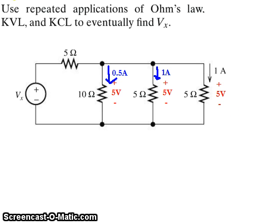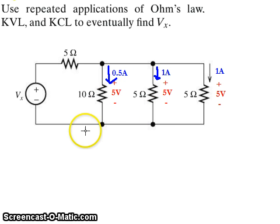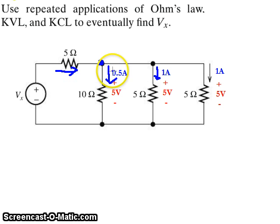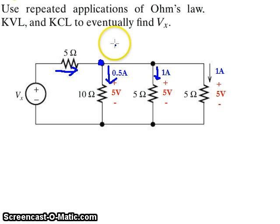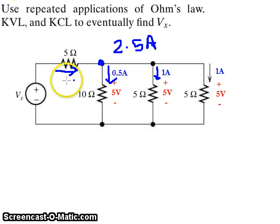Now we have three currents: 1 amp going through this 5 ohm, 1 amp going through this 5 ohm, and half an amp going through the 10 ohm resistor. Looking at this particular node, the total current coming into that node must equal the current going out. The total current coming out is half an amp, 1 amp, and 1 amp, giving us a total of 2.5 amps going out — so the total current going into that node must also be 2.5 amps, meaning the current flowing through the left 5 ohm resistor is 2.5 amps.